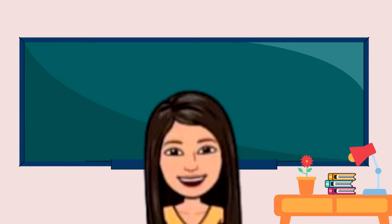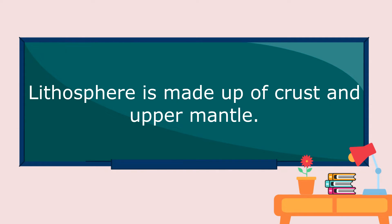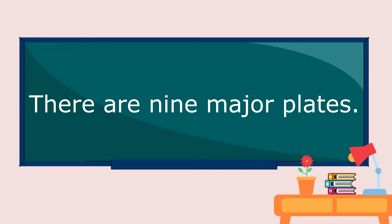So that's about the lithosphere. Now let us summarize what we have learned. The lithosphere is the solid, rigid, outer part of the Earth's surface. Continental crust is thicker and less dense, while oceanic crust is thinner and denser. There are nine major plates.